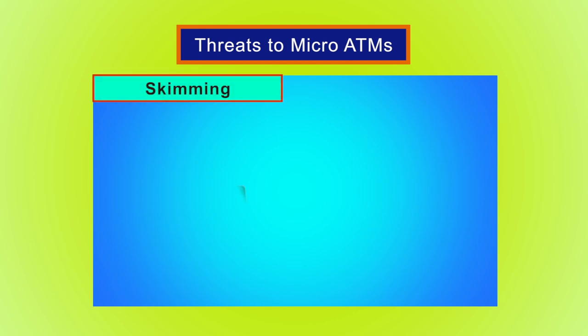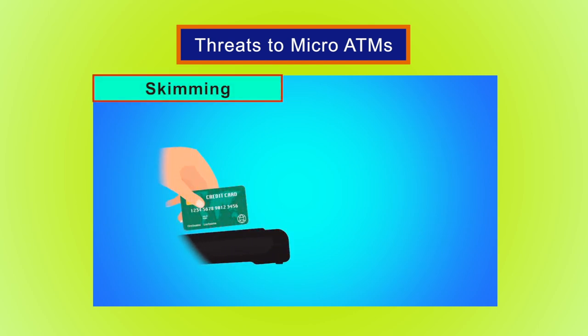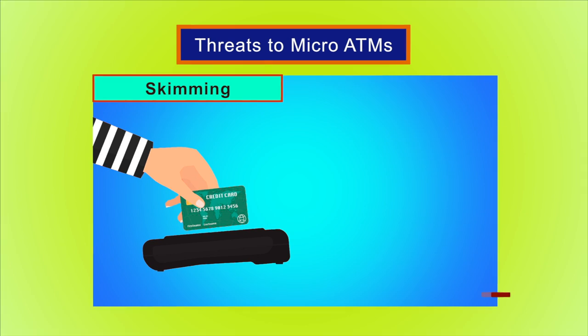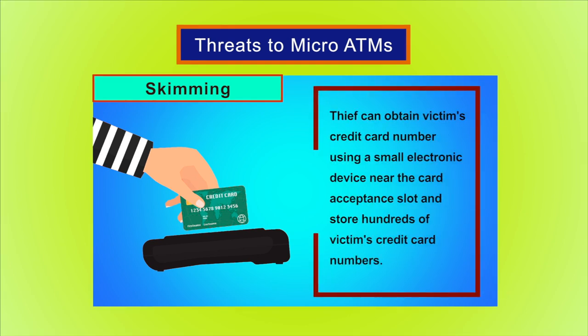Skimming is the theft of credit card or debit card information. A thief can obtain a victim's credit card number using a small electronic device placed near the card acceptance slot, and store hundreds of victims' credit card numbers.